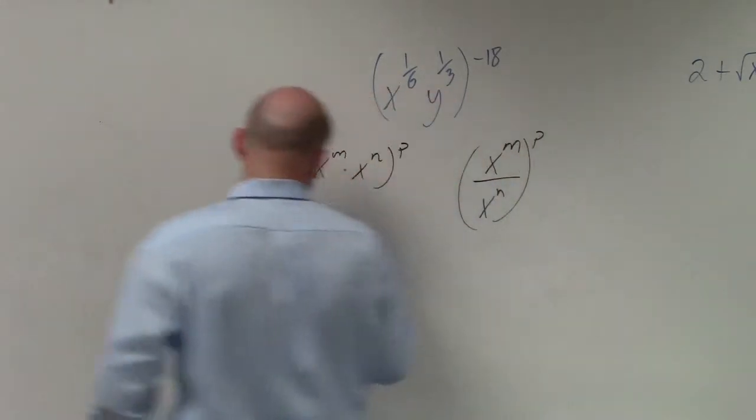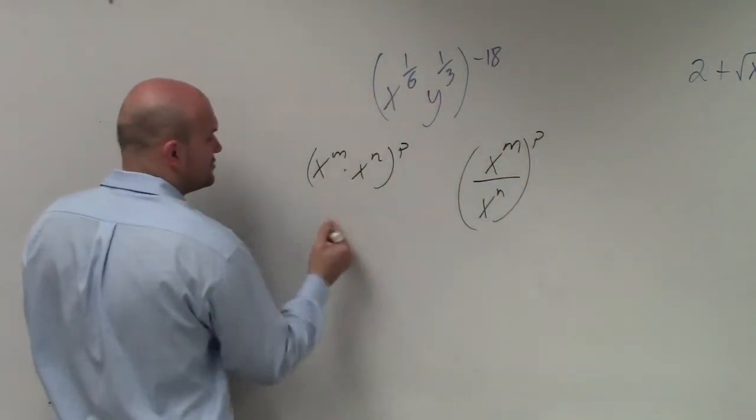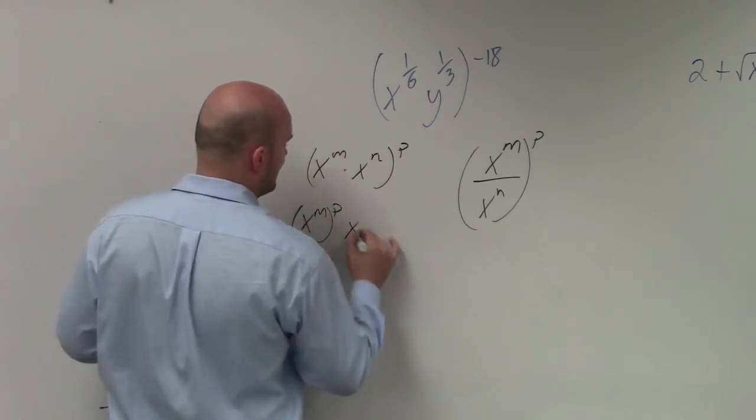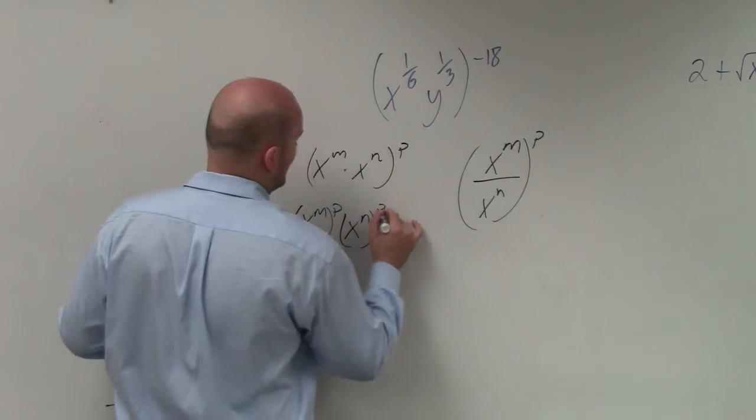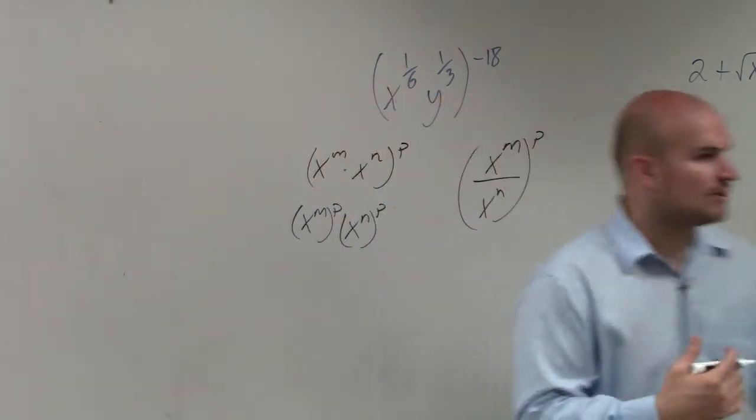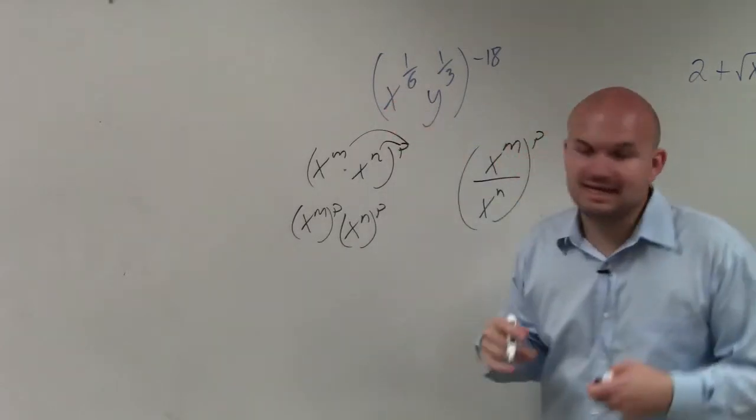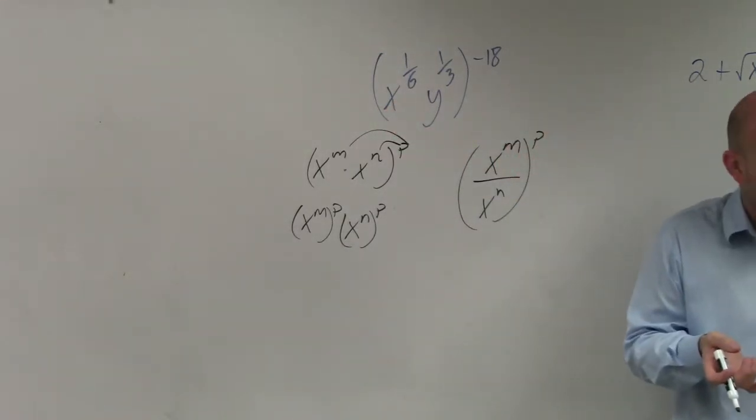Basically what these two rules mean is that when you have a product raised to a power, then both of those terms you're multiplying by are going to be raised to that power. So basically what you're going to do is you're going to distribute the p to both of those exponents. Does that make sense?